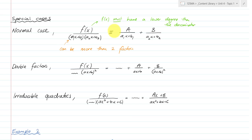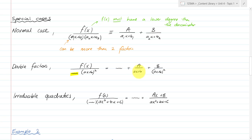You might also have double factors. So if you've got something like AX plus B squared, if you have a double factor, you still have your normal constant over each other linear factor, but then your double factor is represented as a constant over the linear component of the double factor, and then a constant over the quadratic component — the actual double factor.